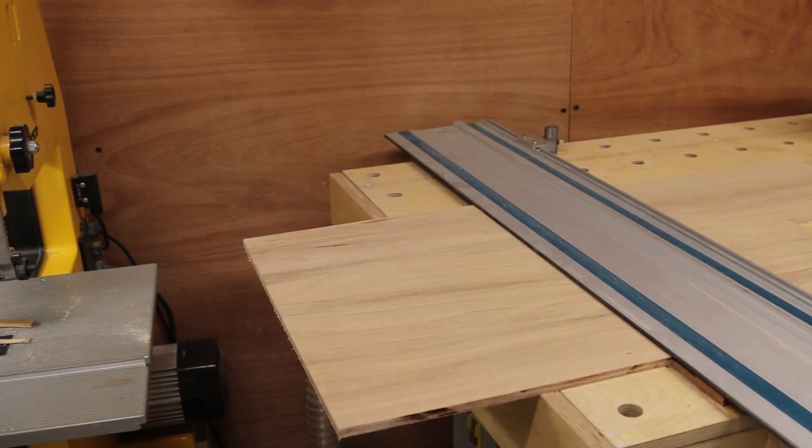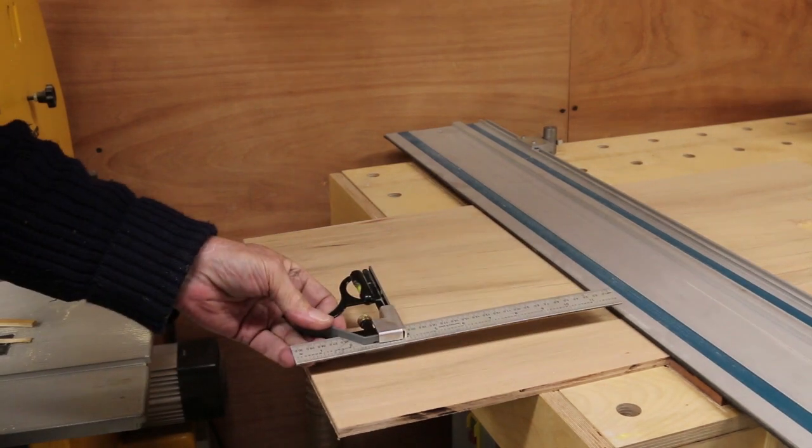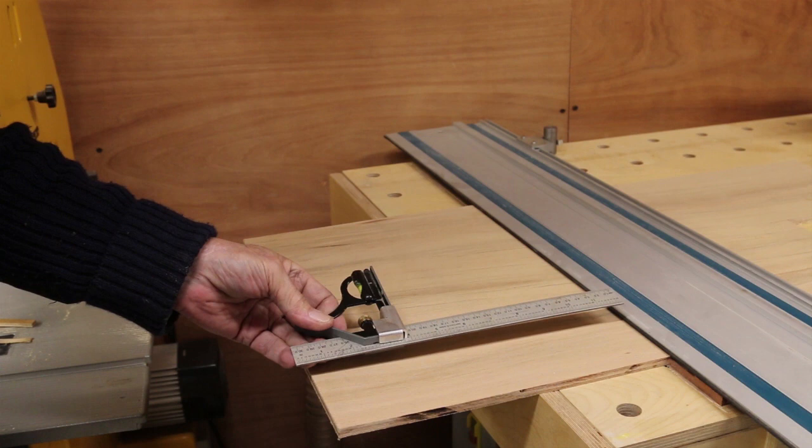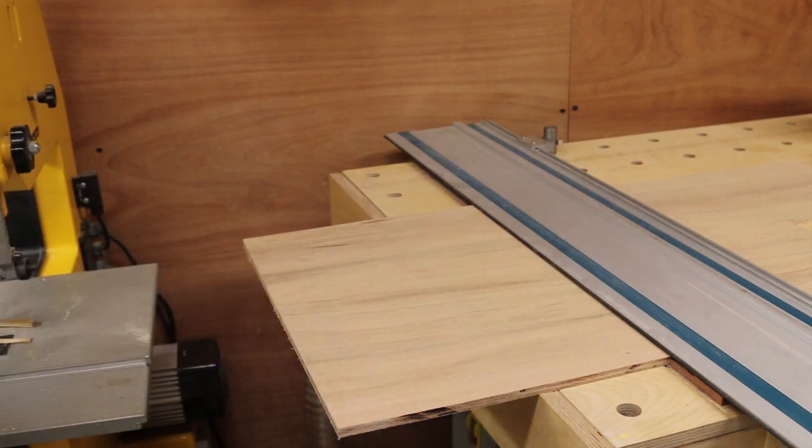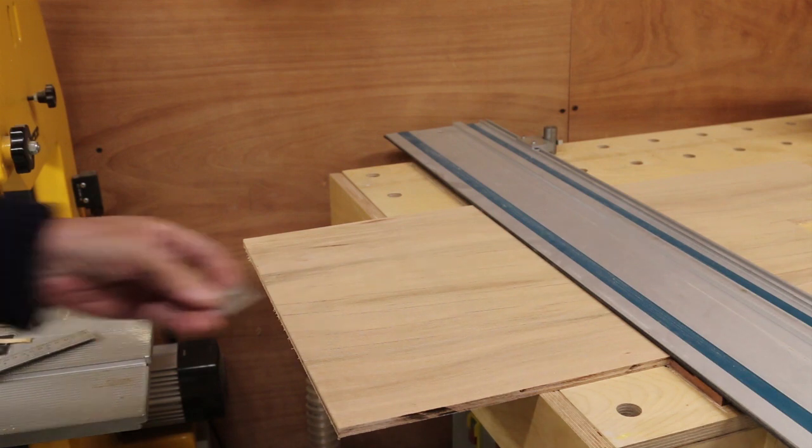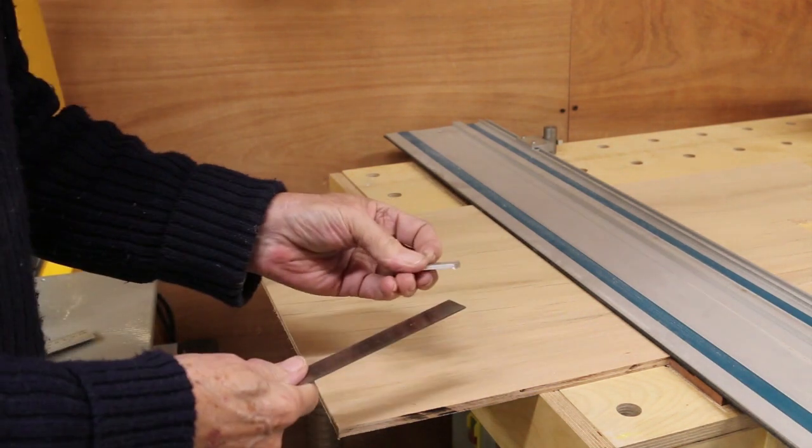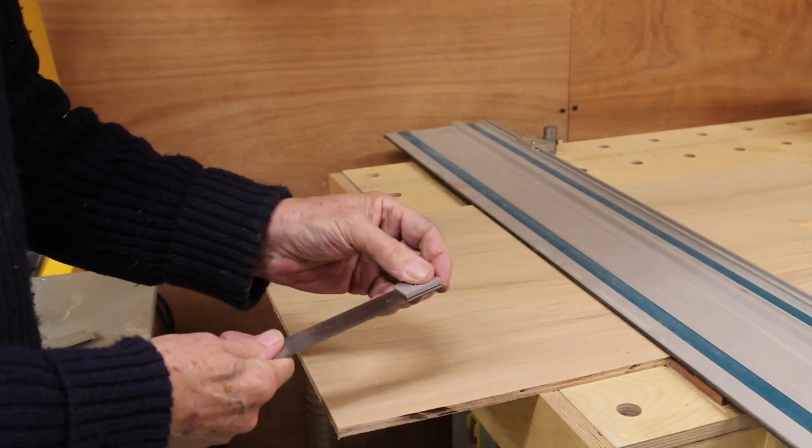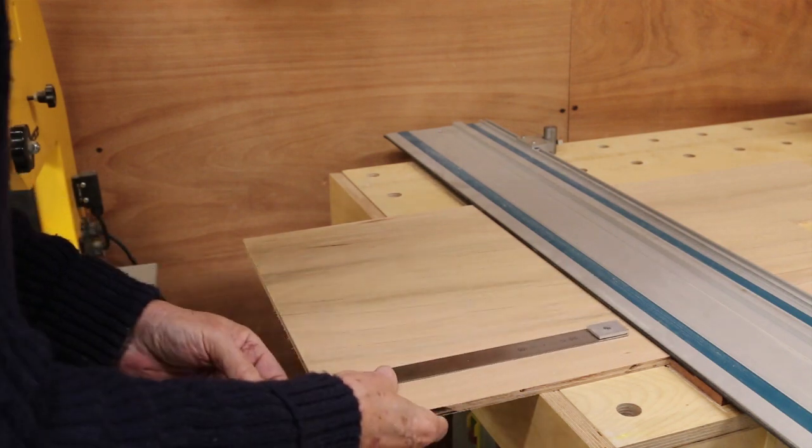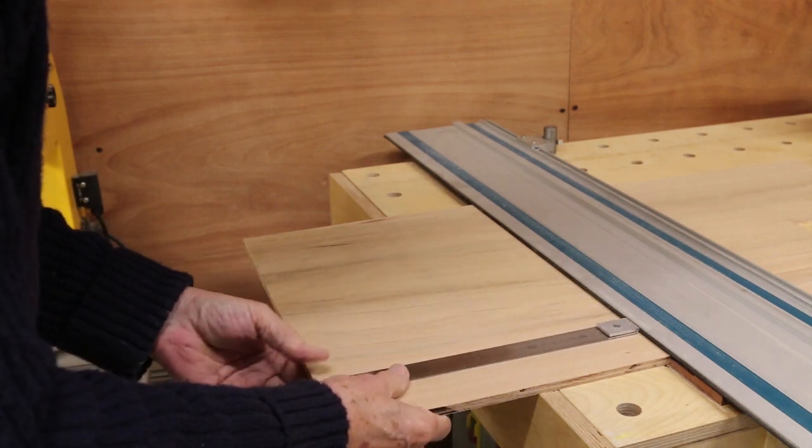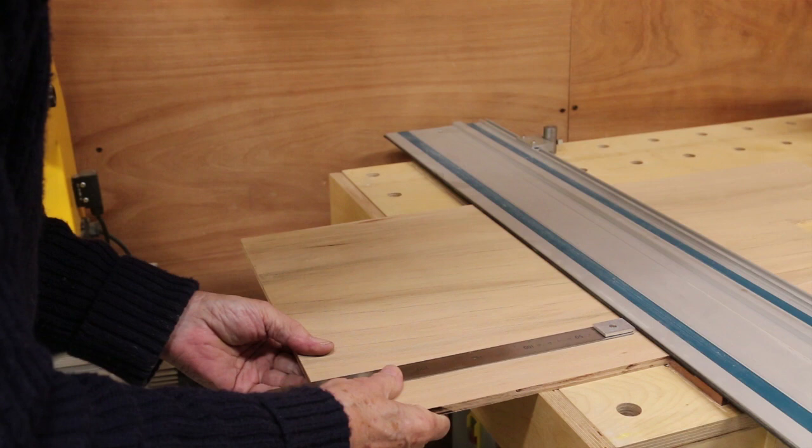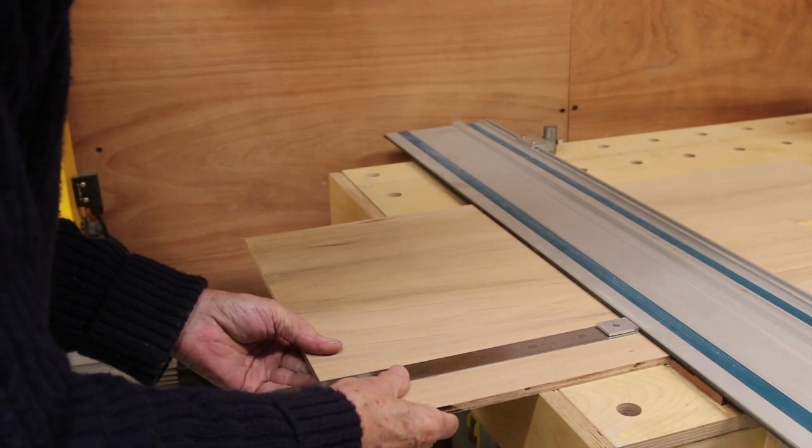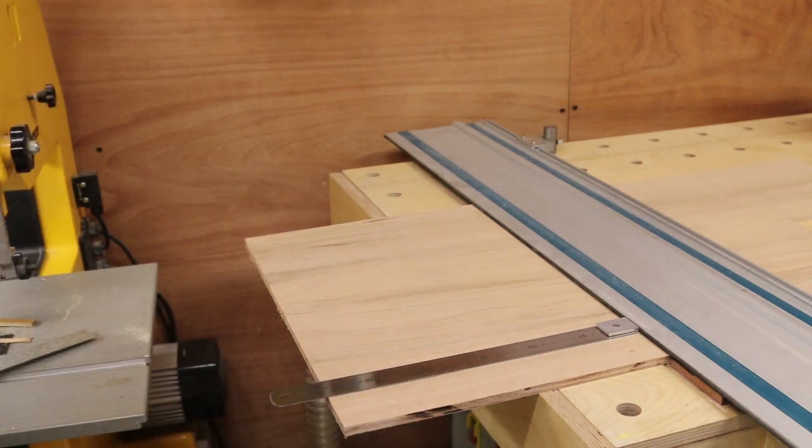But what happens if the cut you want to make is too big for the use of a combination square? Well then you need a ruler which can be a steel rule of any length and you need the kerf plus. This snaps on to the end of the rule and you can measure the distance in the normal way. That's it set.